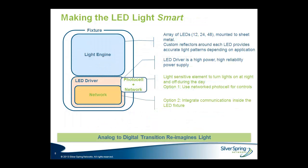Let's look at how Silver Spring's network can make a traditional LED light smarter. The diagram shows a traditional fixture with a light engine and LED driver. The first hardware option integrates the network directly inside the fixture by putting the communications module in tandem with the LED driver, turning the LED fixture into a communicating node. The second option upgrades the photocell by adding the communications module inside it, with options including the ANSI 3-pin standard as well as the emerging 4- and 5-pin standards.